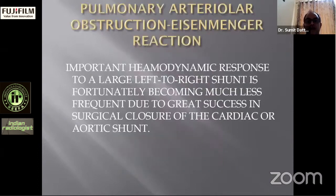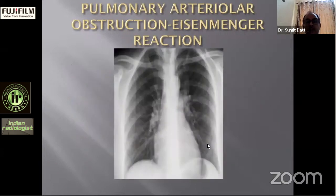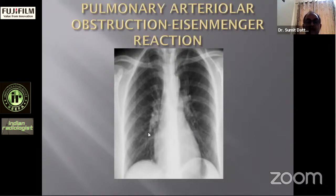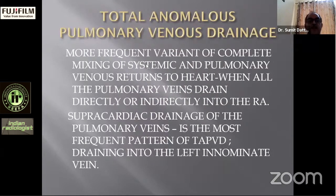Eisenmenger's reaction is an important hemodynamic response to a large left-to-right shunt, fortunately becoming less frequent due to surgical closure of cardiac and aortic shunts. We see dilated central pulmonary arterioles — the main pulmonary trunk, central pulmonary arteries, lobar and segmental arteries — but peripheral arterioles are not dilated because reactive pulmonary arterial sclerosis has set in, reducing and ultimately reversing the left-to-right shunt, with the heart size returning toward normal.